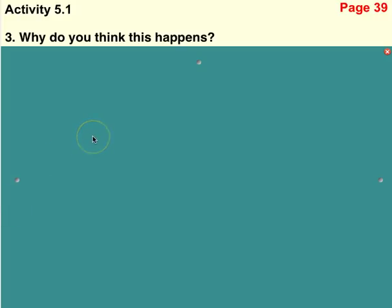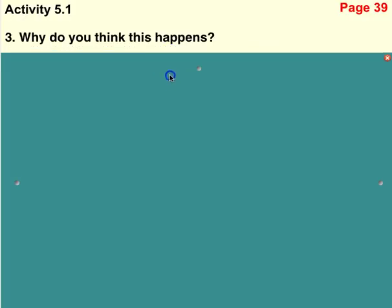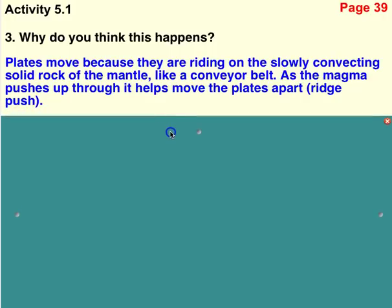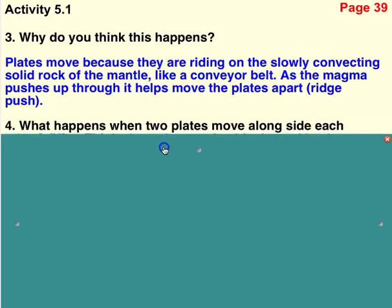Question three: why do you think this happens? Pause the video and answer. Plates move because they are riding on a slowly convecting solid rock of the mantle — the asthenosphere — which acts like a conveyor belt. As the magma pushes up through, it helps move the plates apart. These are the convection currents we've been talking about in class and have done labs with.